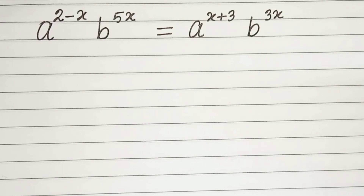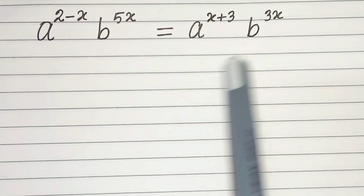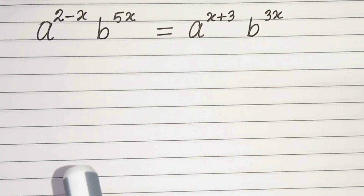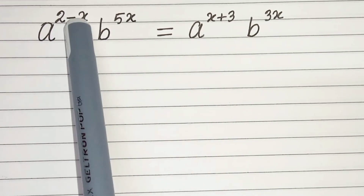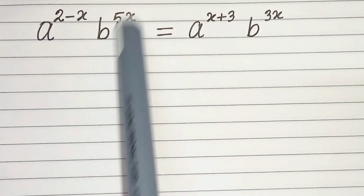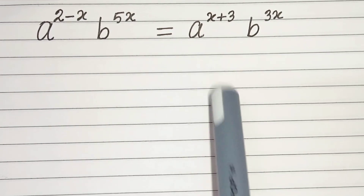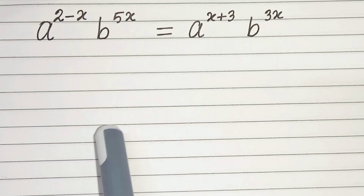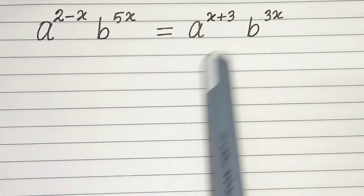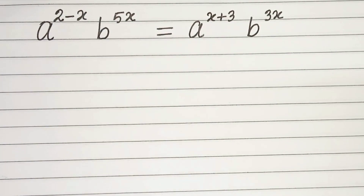Hello everyone. In this video we have this algebraic question. The question is: a to the power 2 minus x times b to the power 5x equals a to the power x plus 3 times b to the power 3x. We have to solve this and find the value of x.